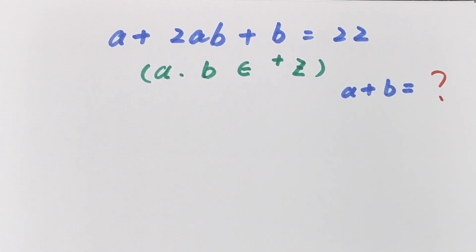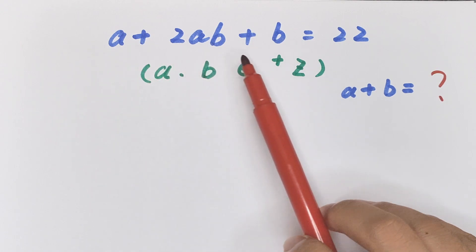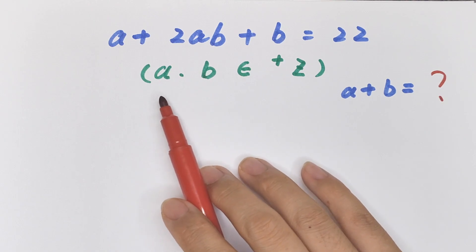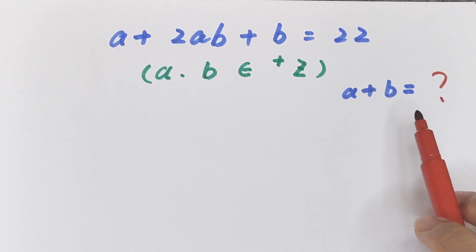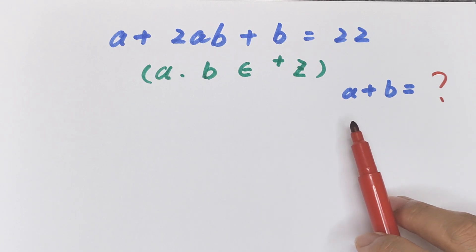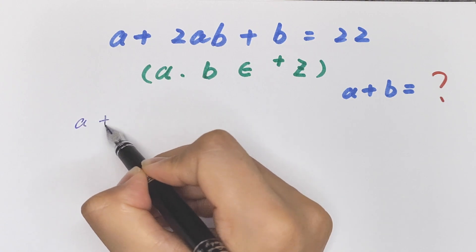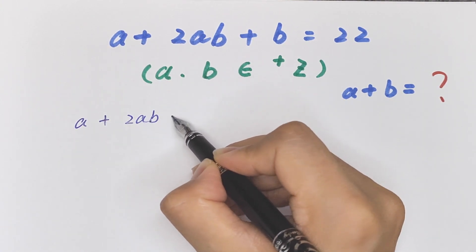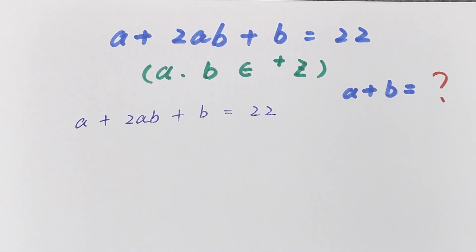Hello everyone, welcome to Math4U. How to solve a + 2ab + b = 22, where a and b are positive integers. We need to find the value of a + b.